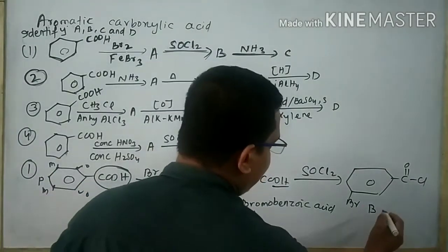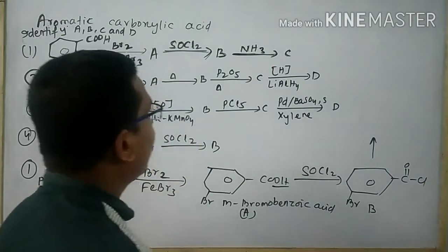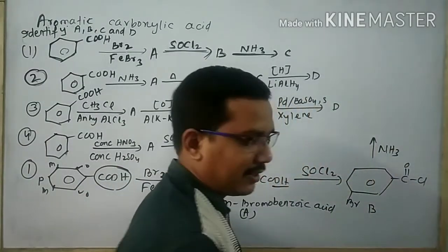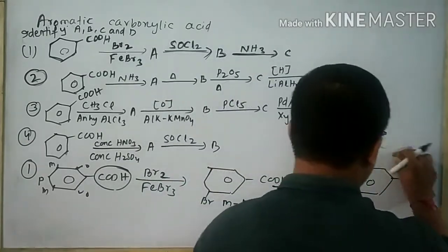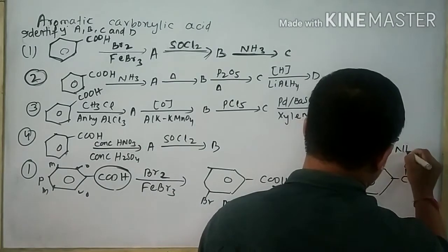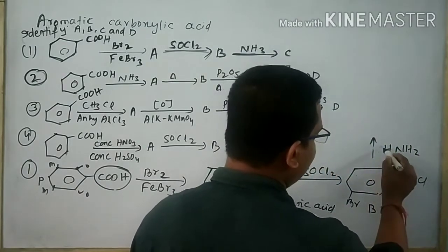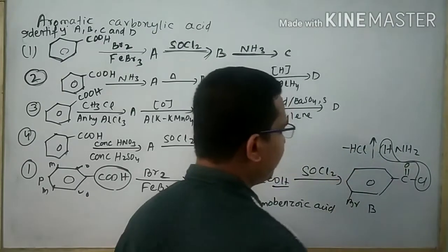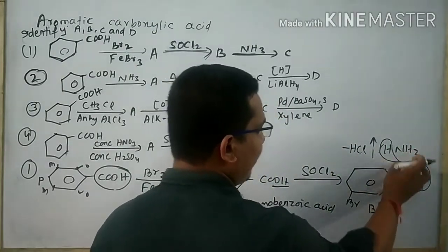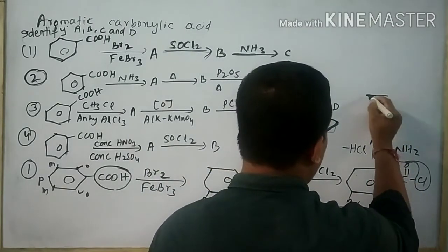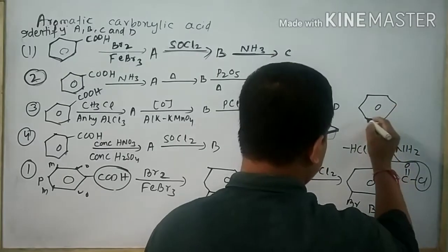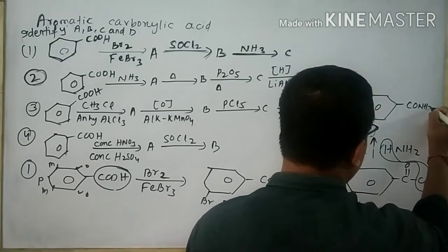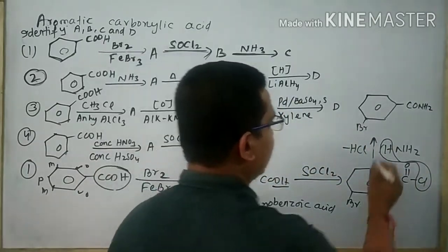Now this B product will react with NH3. Your hydrogen atom will react with the chlorine atom, forming a by-product that is HCl. And NH2 will attach here and form this product. This is your said to be C.